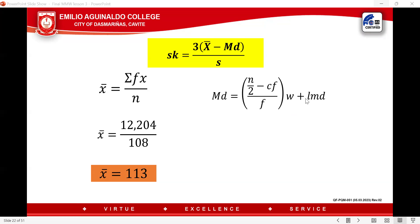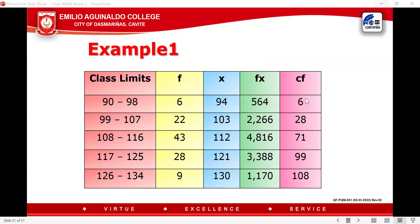Going back to the table, since the median class is 108 to 116, we highlight it. The cumulative frequency after the median — since we started from highest to lowest — is 28. Note: if we had started from smallest to highest, cf would be 'before'; but here it is 'after', so cf equals 28.